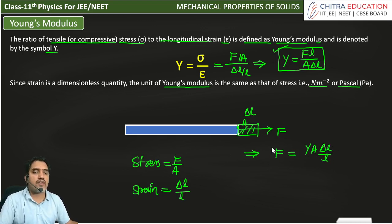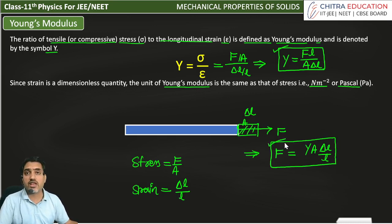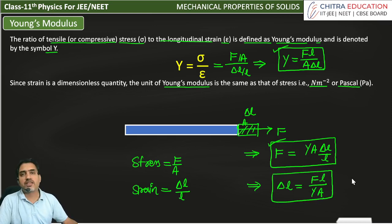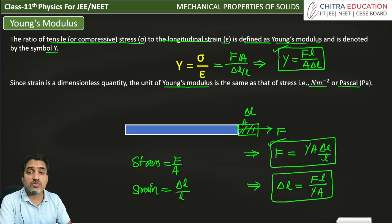So here we have to know F which is very important. If you have to find delta L means deformation, you can write F into L divided by Y into A. This is also a very important formula. Next lecture we are going to talk about shear modulus and how we use it.